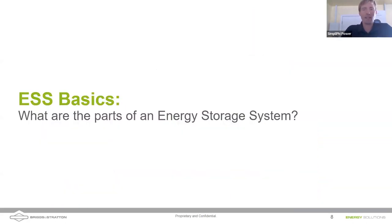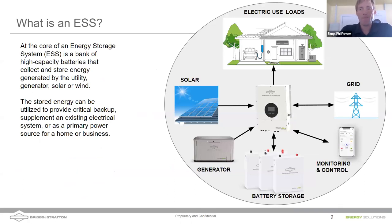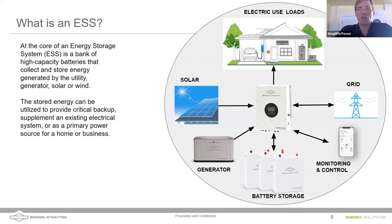ESS stands for energy storage system — essentially battery storage for a home. You can't just have batteries; you need an inverter. The inverter is the hub that directs different power sources to loads and batteries. Various power sources — solar, grid, generator — all pass through the inverter and connect to the home.